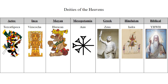Next are deities of the heavens or sky. All of these deities represent the heavens in some regard. Interestingly, the Mayan one is an alternate spelling of Hurricane, but it is the same character. And Anu is represented here by his cuneiform symbol, as opposed to an image, because there are no surviving images of Anu.